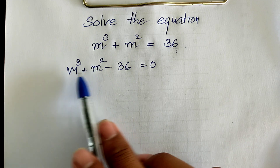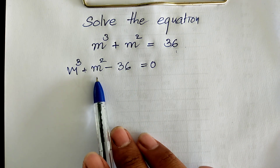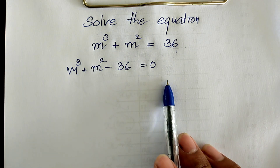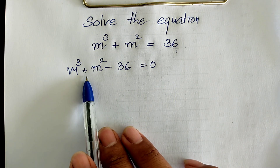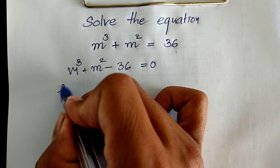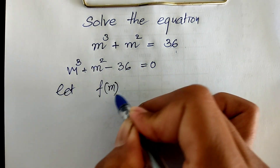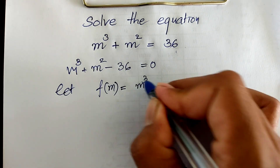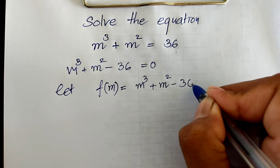Our equation has degree 3, so it may also have three solutions. I let f of m equal to m power 3 plus m square minus 36.